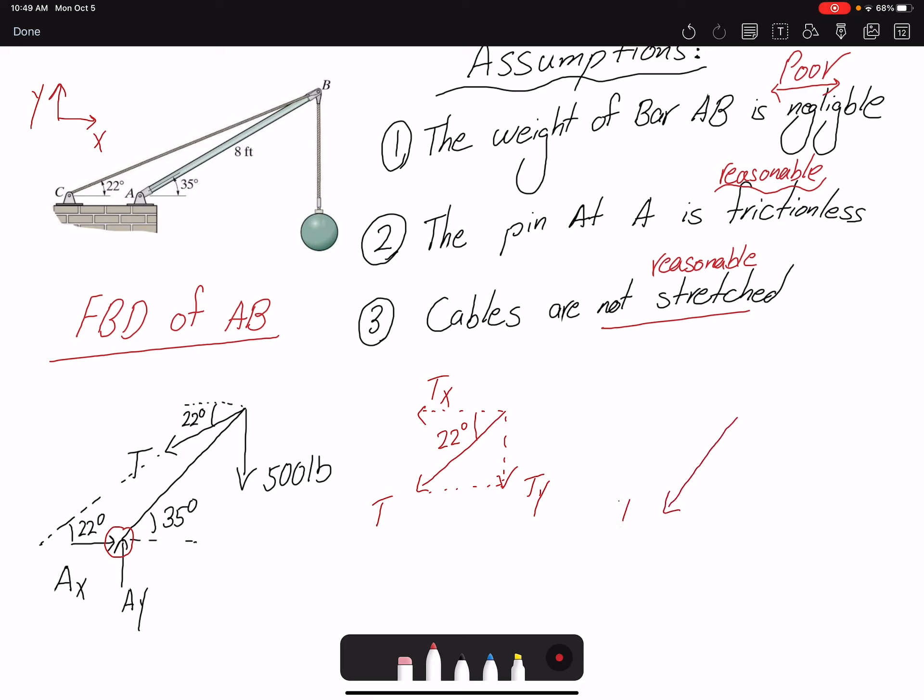Or another way to do this is to find a component of T along our member AB. So our member AB is in this direction. So if I want to find a component here, one towards the member and one perpendicular to the member, so one component here and one component here.